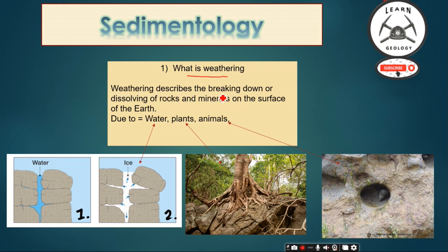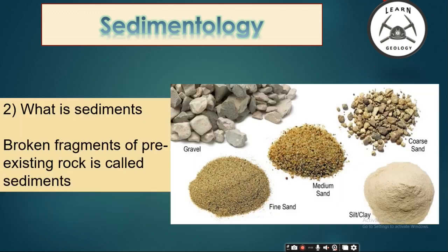The first one is weathering. Weathering describes the breakdown and dissolving of rocks and minerals on the surface of the Earth due to water, plant roots, and animals.